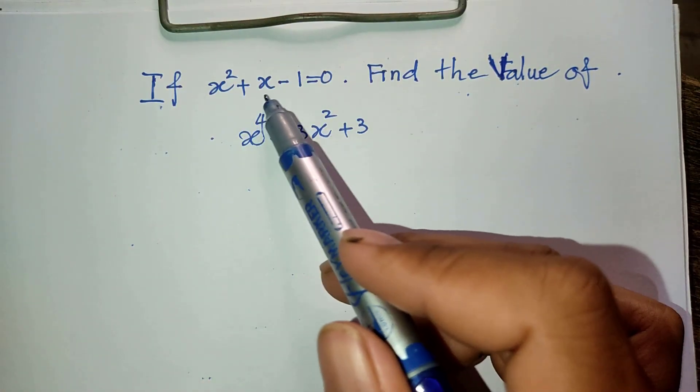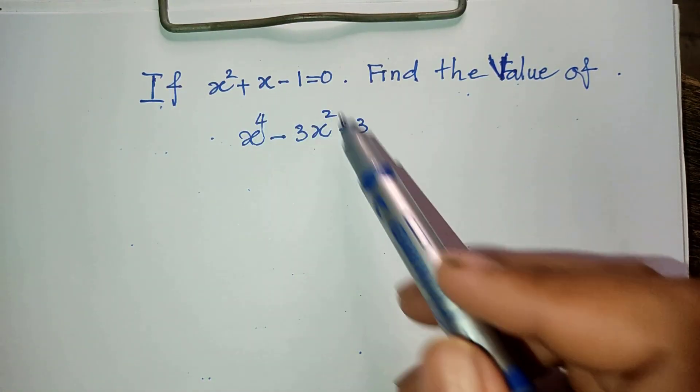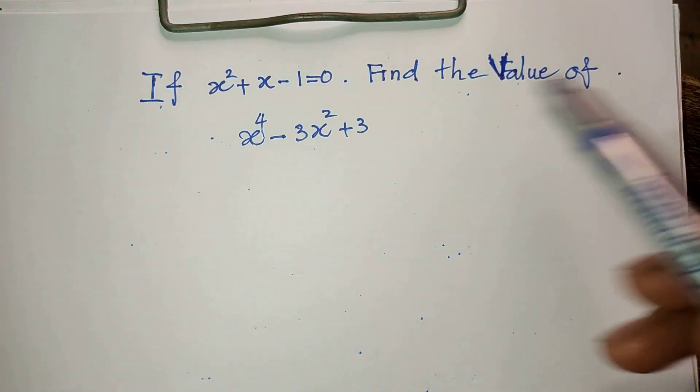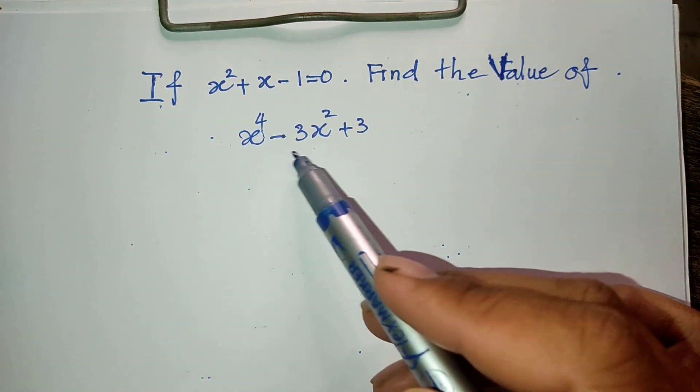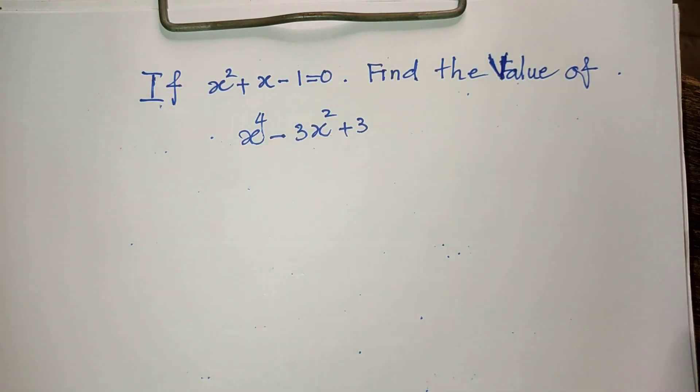If x squared plus x minus 1 equals 0, find the value of x power 4 minus 3x squared plus 3.